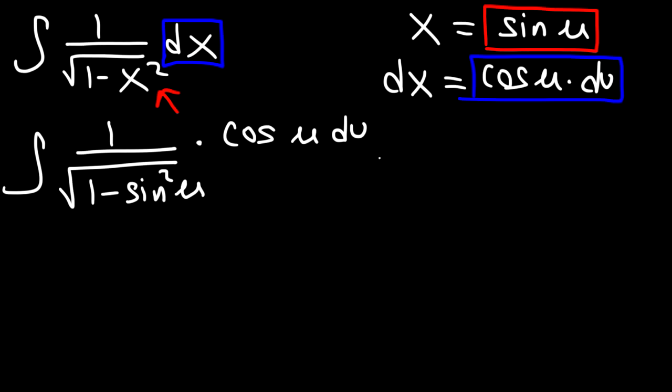And it's this one: sine squared plus cosine squared is equal to 1. And so if we subtract both sides by sine squared, we'll get that cosine squared is 1 minus sine squared.